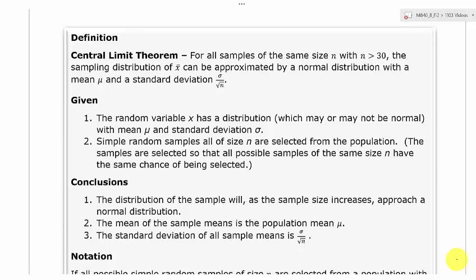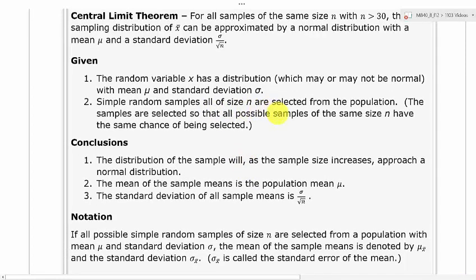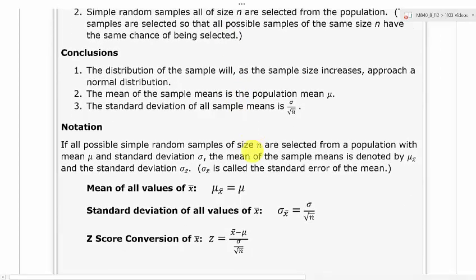So some things that are given: the random variable x has a distribution which may or may not be from a normal distribution, and it has a mean mu and a standard deviation of sigma. Simple random samples, all of size n, are selected from the population so that all possible samples of the same size n have the same chance of being selected — that's basically just the definition of a simple random sample. Our conclusions are that the distribution of the sample will, as the sample size increases, approach a normal distribution. The mean of the sample means is the population mean, and the standard deviation of all sample means is the standard deviation divided by the square root of n.